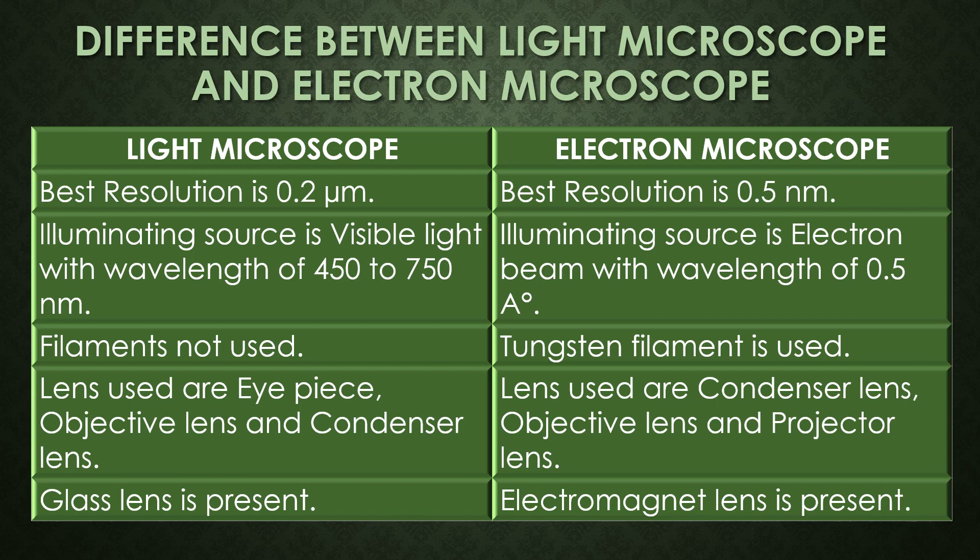In the light microscope the illuminating source is visible light with a wavelength of 450 to 750 nanometers, and in the electron microscope the illuminating source is an electron beam with a wavelength of 0.5 nanometers. Filaments are not used in the light microscope, but a tungsten filament is used in the electron microscope.